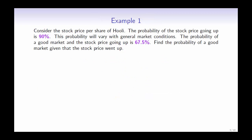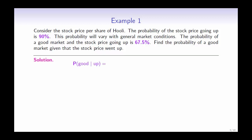Let's look at our first example. Consider the stock price per share of Hooli. The probability of the stock price going up is 90%, and this probability will vary with general market conditions. The probability of a good market and the stock price going up is 67.5%. Find the probability of a good market given that the stock price went up.